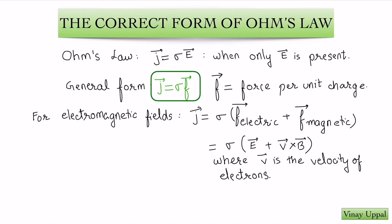The concept behind this question is again the correct form of Ohm's law. Usually, Ohm's law is studied as J equals sigma E, where only E is present. But in the general case, as we saw in the previous part of the Corbino effect, J equals sigma F, where F is the net force per unit charge. For electromagnetic fields, F includes the electric force per unit charge, which is the electric field E, as well as the magnetic force per unit charge, which is V cross B, where V is the velocity of the electrons.